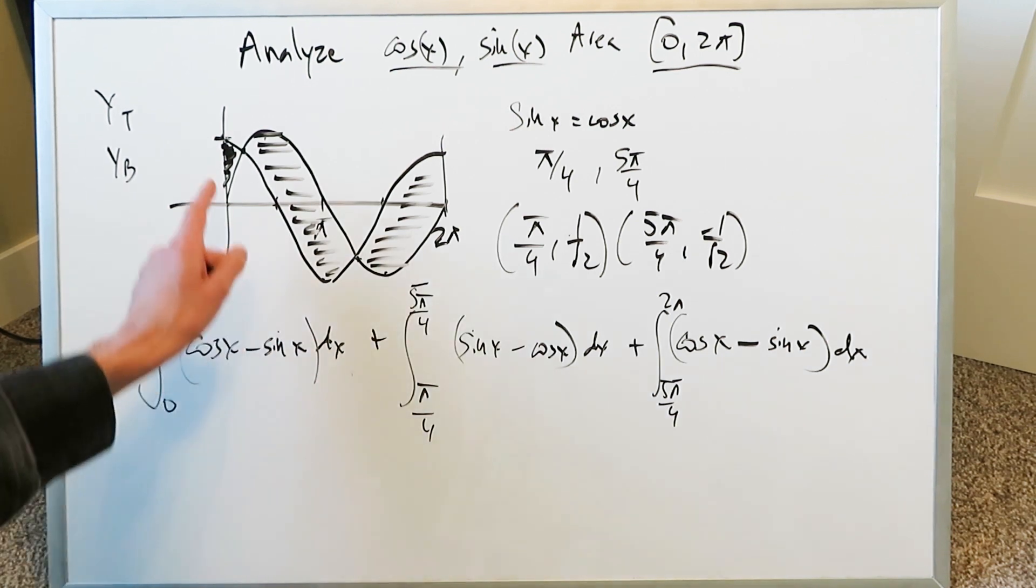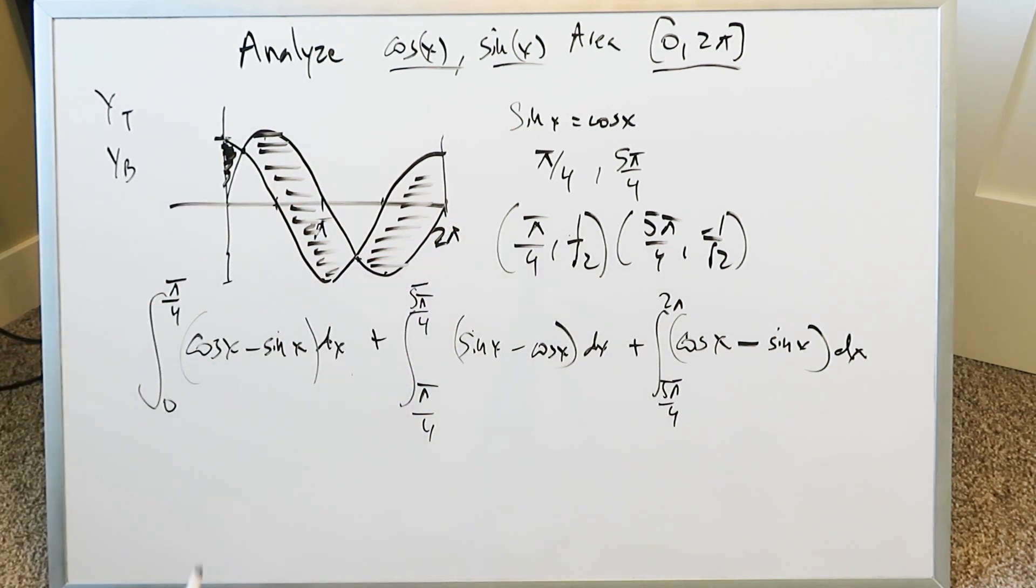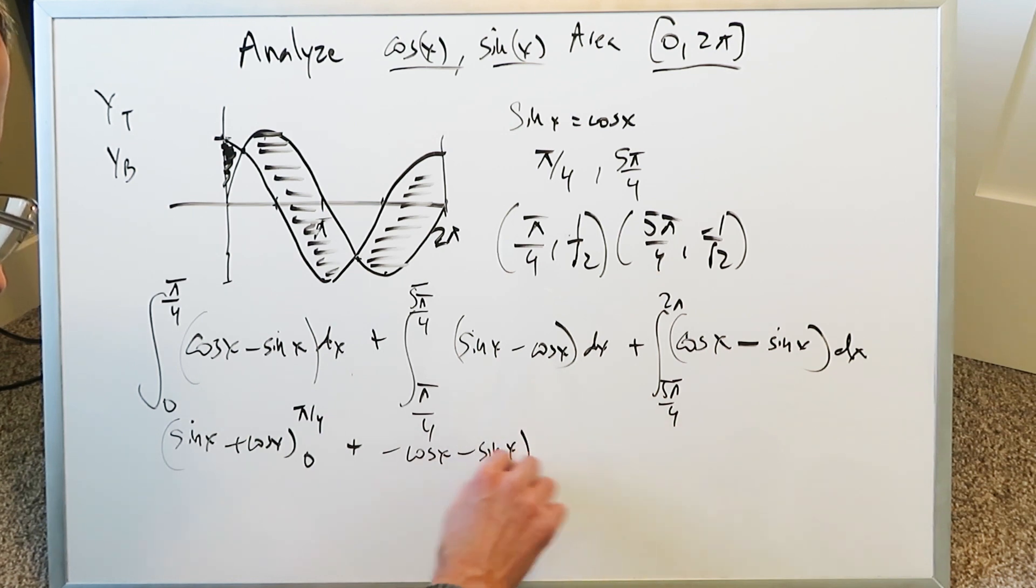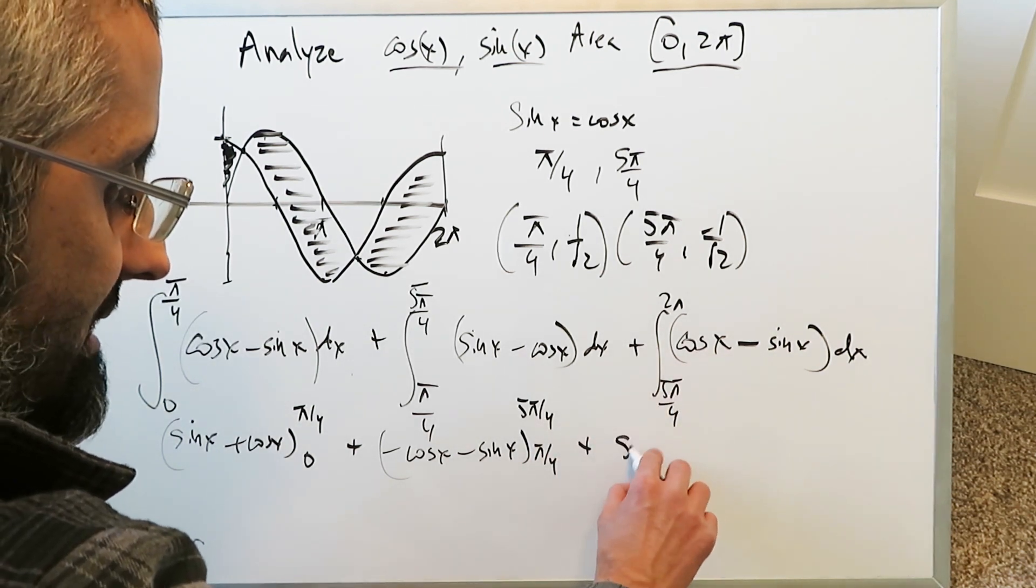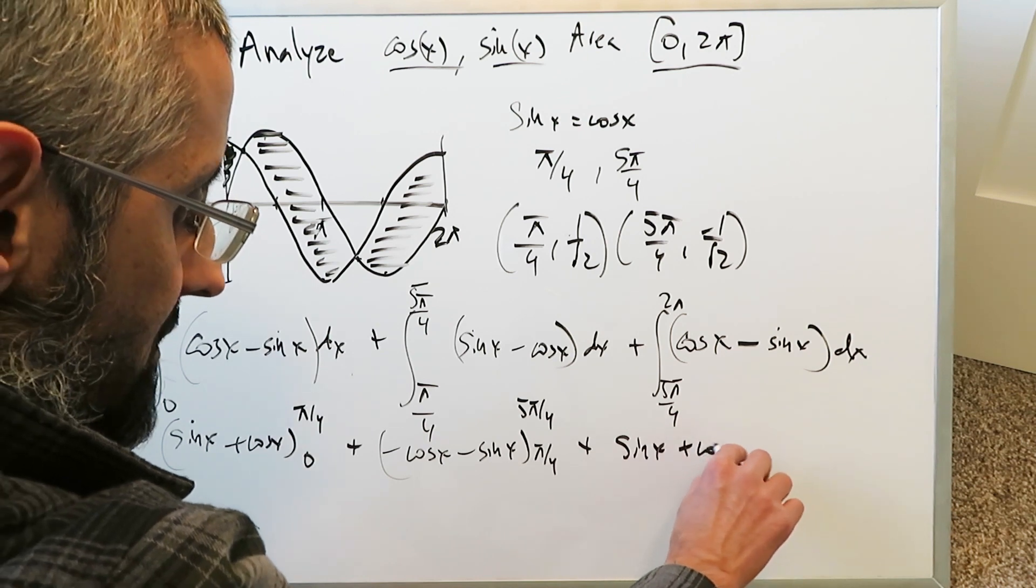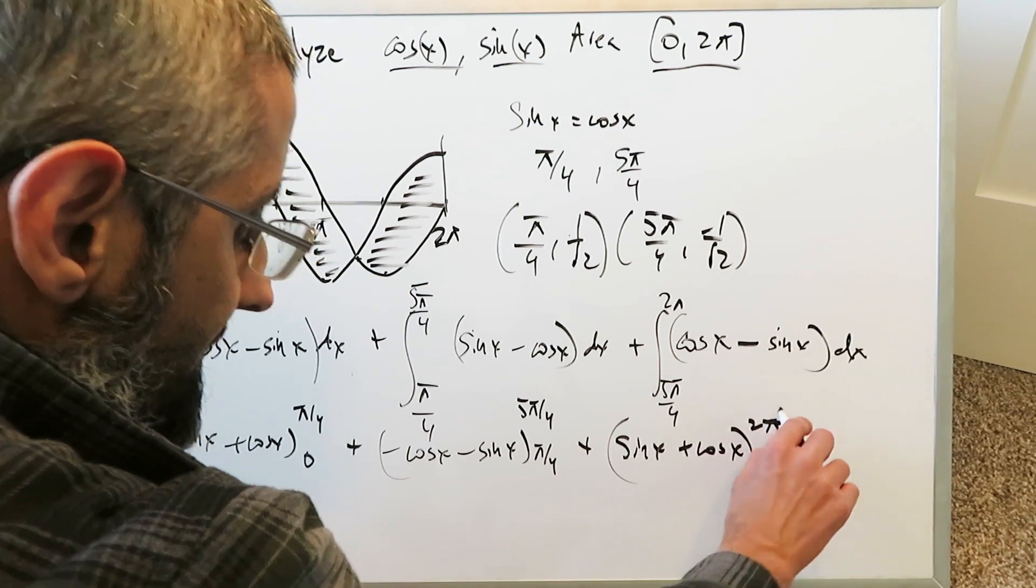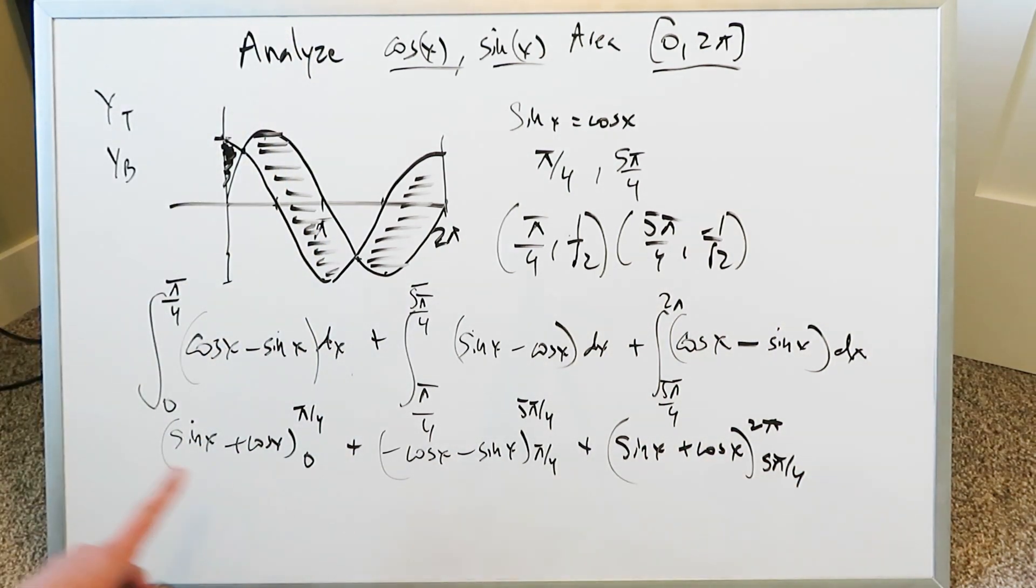When you integrate, you get the cumulative area below the curves. You have -sin(x) + cos(x) from π/4 to 0. Then you have -cos(x) - sin(x) from 5π/4 to π/4. Lastly, you have -sin(x) + cos(x) from 2π to 5π/4. This will require a bit of work.